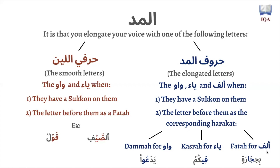Finally, for the alif, the corresponding haraka is the fatha. So whenever you have an alif and the letter before it has a fatha — which is actually every single time an alif comes — you're going to elongate the 'a' sound and open your mouth more than usual. So instead of saying 'bihijaratin', you say 'bihijaaaarah'.